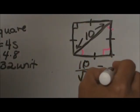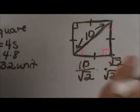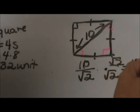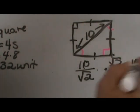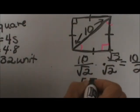We rationalize that by multiplying by the square root of 2 over the square root of 2. Let's multiply first, and that gives us 10 square root of 2 over 2, which is simply 5 square root of 2.